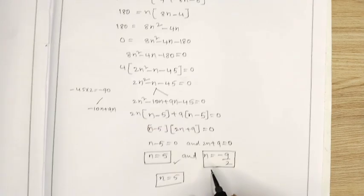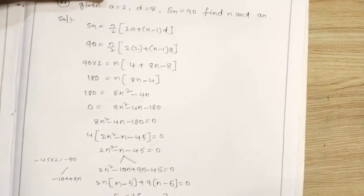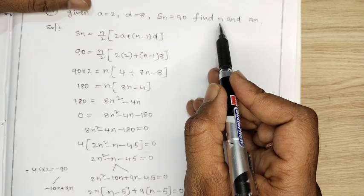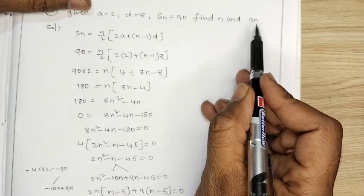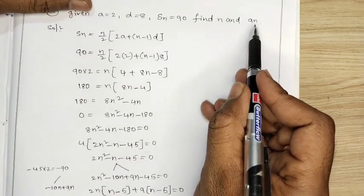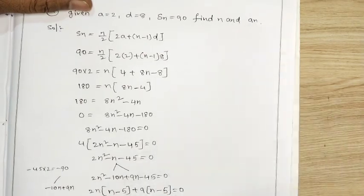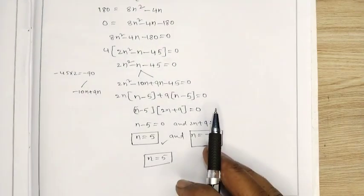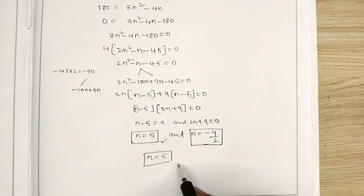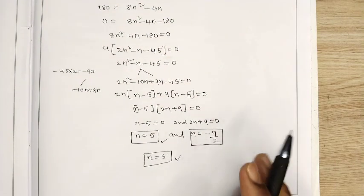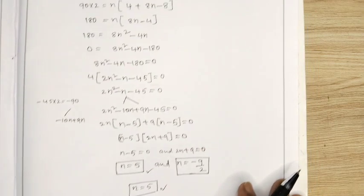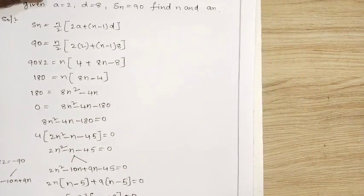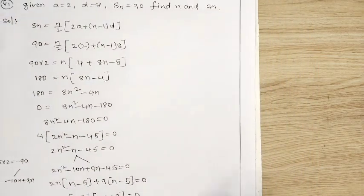So from the question, find n — n is 5, we got that. Next we have to find an. n is 5, so we have to find the an value.